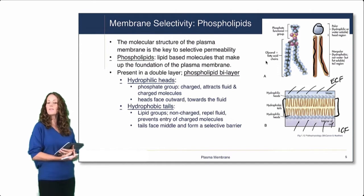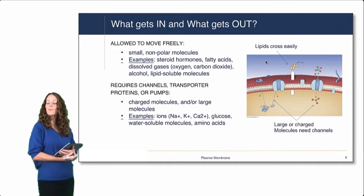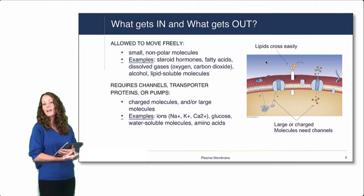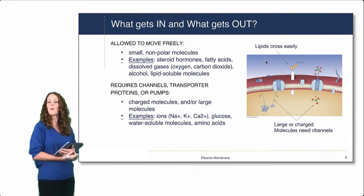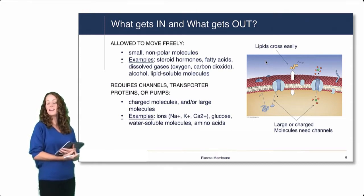So what gets in and what gets out of the plasma membrane? Moving freely through the plasma membrane will be small, uncharged, or nonpolar molecules. Some examples would be steroid hormones, fatty acids, dissolved gases like oxygen and carbon dioxide, alcohol, and other small lipid-soluble molecules. This is important when we later talk about transport and the ability for molecules to signal inside and outside of the cell.